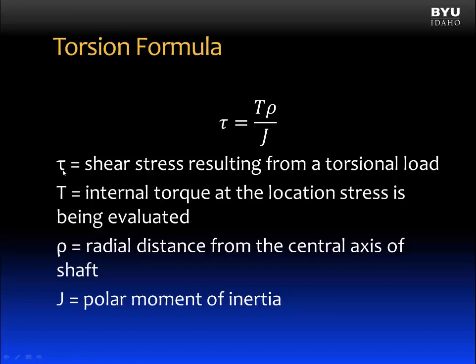And shear stress is equal to T times the Greek letter rho over J. Let's define these terms. Tau, of course, is the shear stress resulting from a torsional load. T is the internal torque at the location the stress is being evaluated. Rho is the radial distance from the central axis of the shaft. And J is the polar moment of inertia.